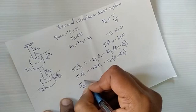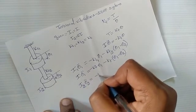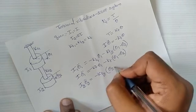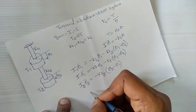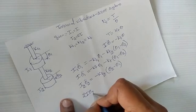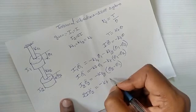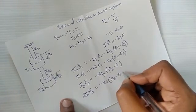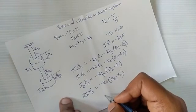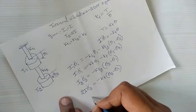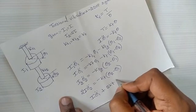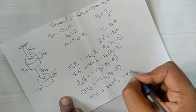For the second equation: I2×theta2_double_dot = -KT2×(theta2 - theta1). Since I2 = 2I, this becomes: 2I×theta2_double_dot = -KT×(theta2 - theta1). Rearranging, the first equation becomes: I×theta1_double_dot + 2KT×theta1 - KT×theta2 = 0.